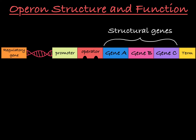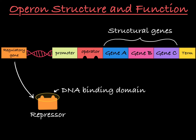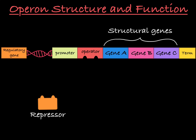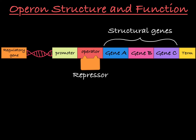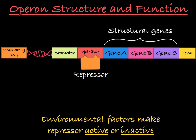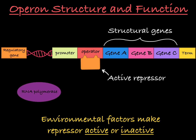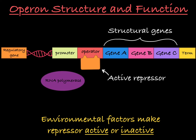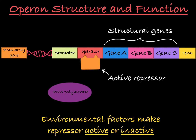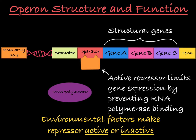And then you have this regulatory gene. This gene encodes a repressor. As you can see, this repressor has a DNA binding domain, and this domain fits onto the operon's operator perfectly. Environmental factors can interact with the repressor to make it active or inactive. When the repressor is active, it will bind to the operator. When it binds, it can prevent RNA polymerase from binding to the promoter and transcribing the genes, effectively limiting structural gene expression.